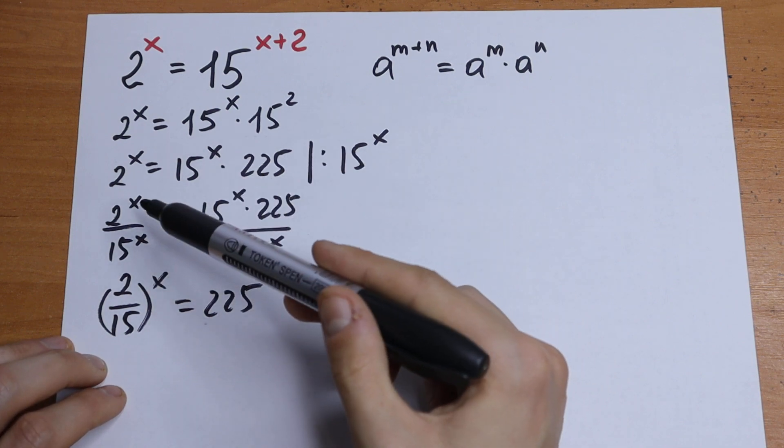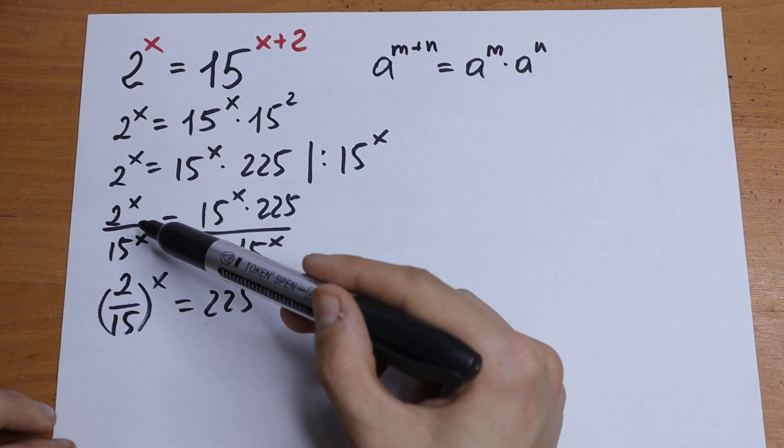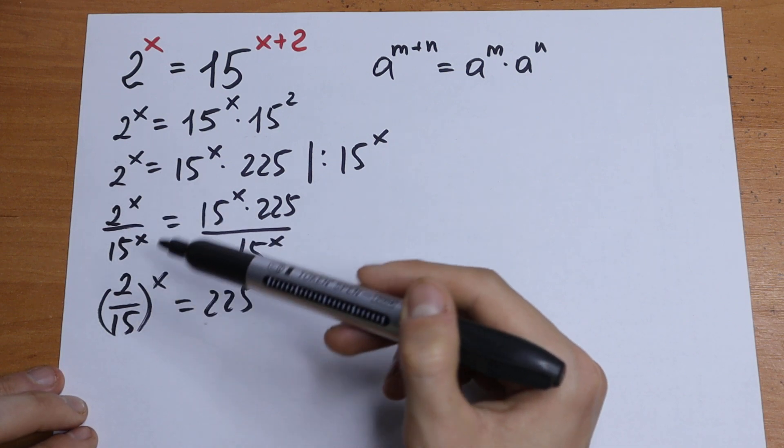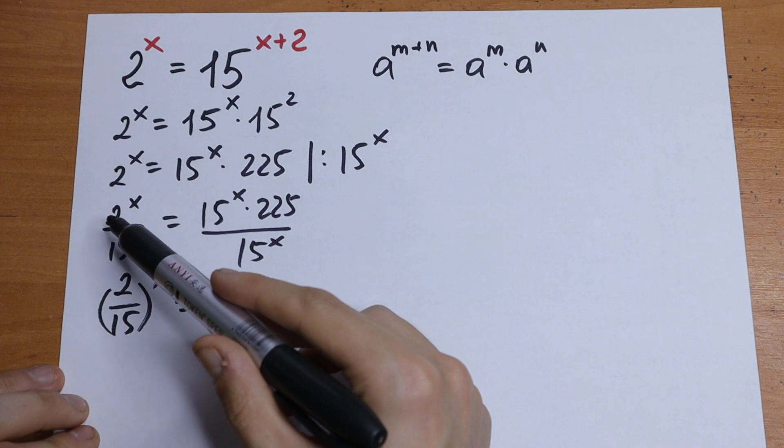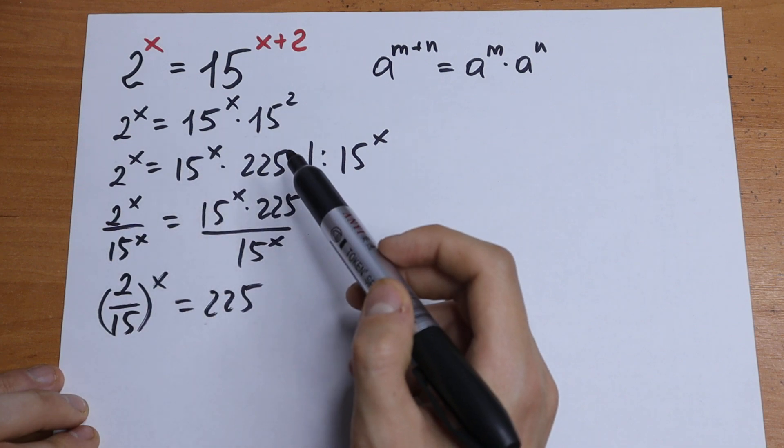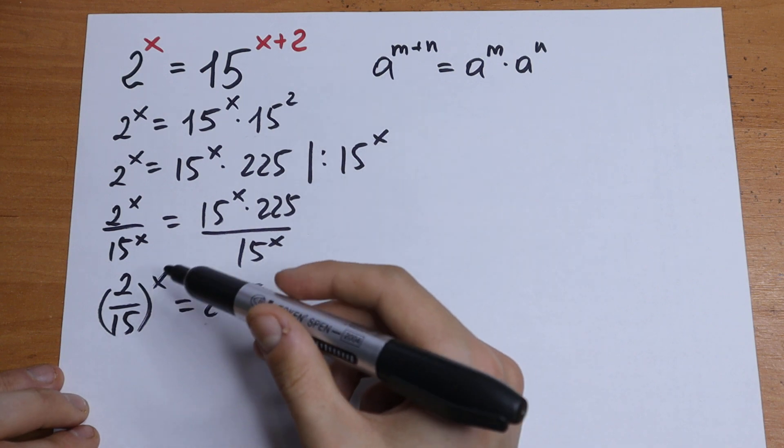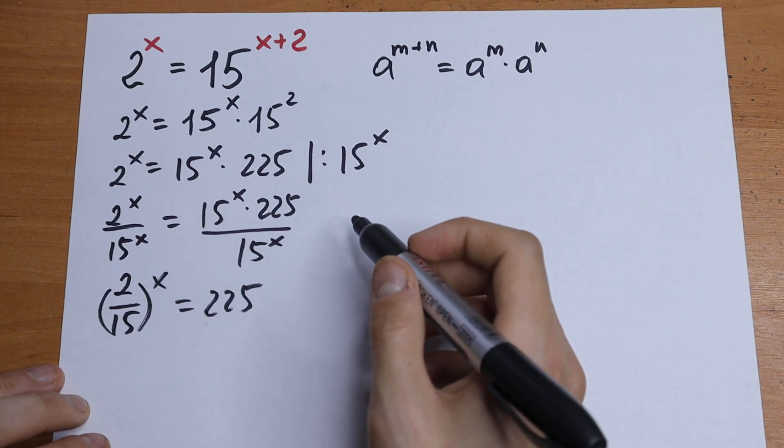Because if we have different bases but same exponent and we have something like that, we can write it in one parentheses, doesn't matter if we have a product 2 times 15 all raised to the power x or we have a division something like that, we can write it in one parentheses using this power x.